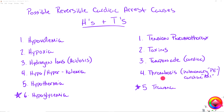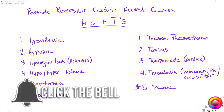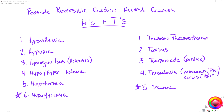Thrombosis is literally just a clot. The two main things we're looking at are clots in your pulmonary system, otherwise known as pulmonary embolisms or PEs, and clots in your cardiac system, otherwise known as MIs or myocardial infarctions — heart attacks. Both of those are significant causes of cardiac arrest.